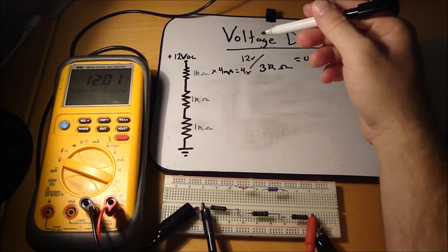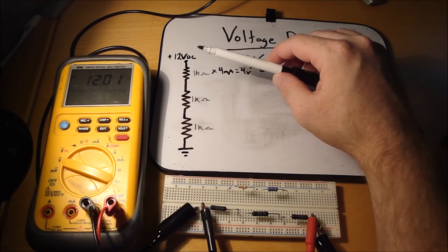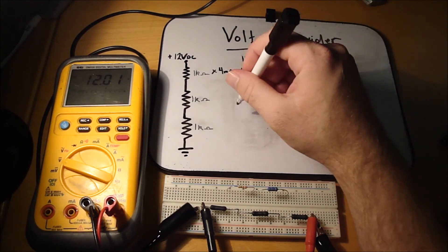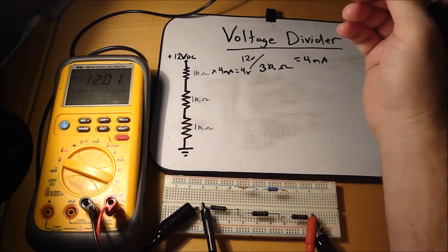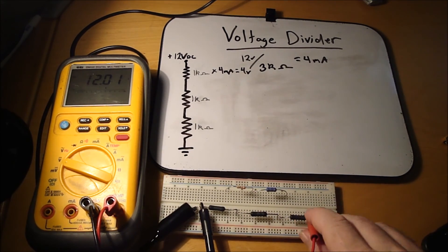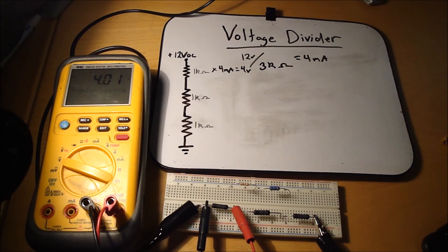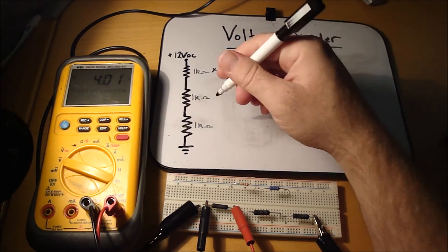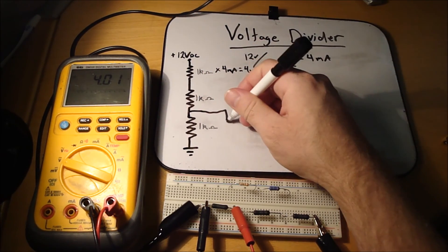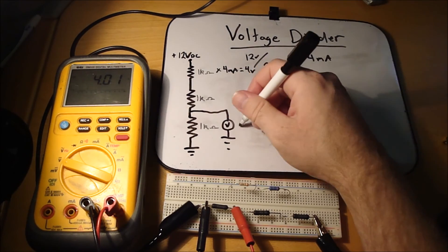Another rule in a voltage divider: if all your resistors are equal in value, just take the total voltage divided by the total number of resistors to get each resistor's voltage drop. Testing it out with 12 volts across three 1 kilo-ohm resistors, the measured voltage drop is 4.01 volts — right there in parallel with that resistor on the volt meter.